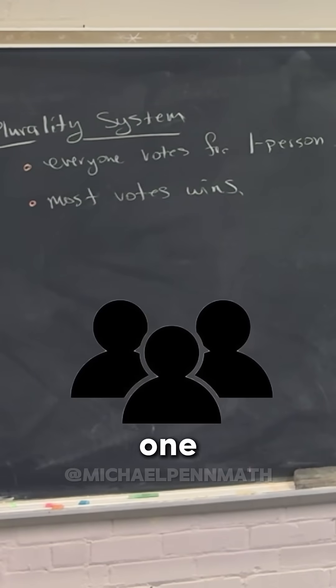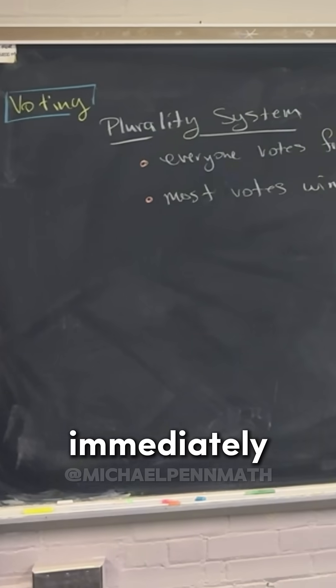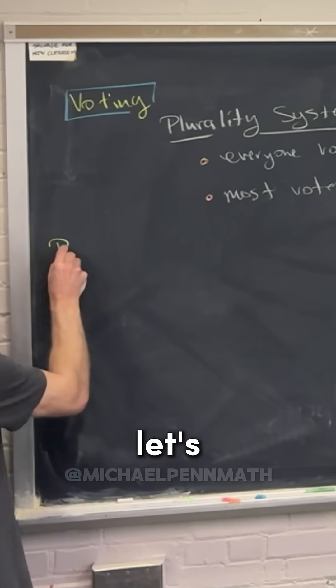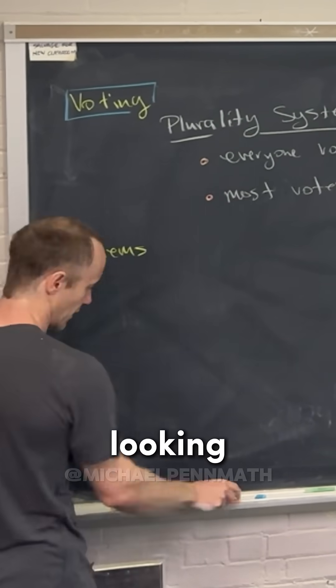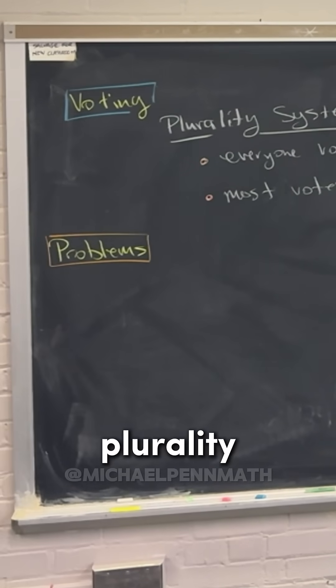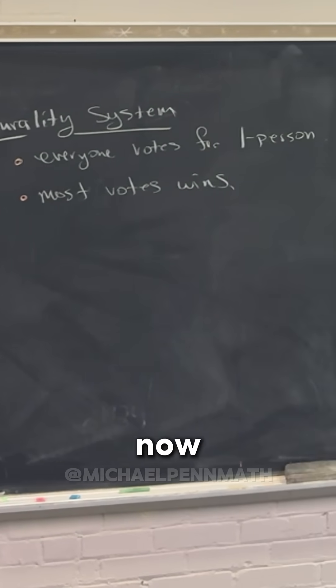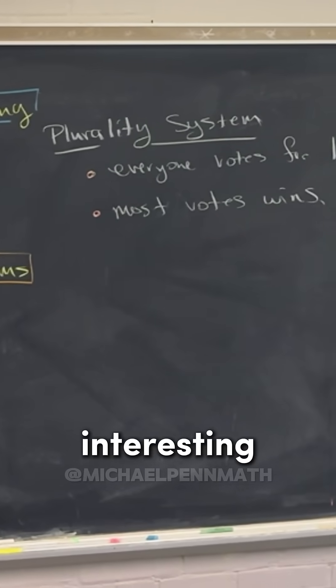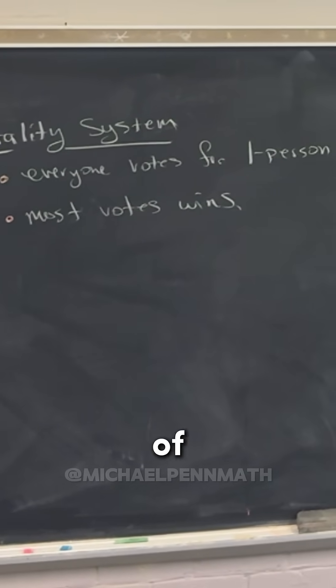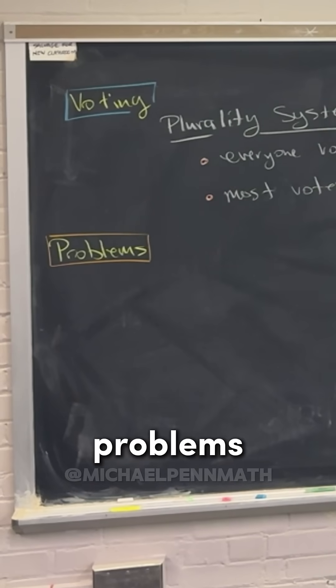But whenever there's more than one choice, you can immediately see some problems. And let's motivate why we're looking at anything other than a plurality system. Because if the plurality system was kind of the only interesting voting system, then we would just stop right now. But the reason it's not the only interesting voting system is because of these interesting problems that we see.